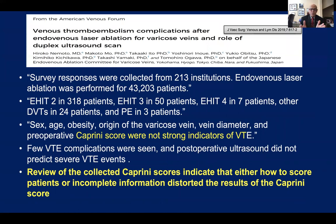A survey response from 213 institutions looked at laser ablation in 43,000 patients, finding very small incidences of EHIT classes 2, 3, and 4, DVT in 24 patients, and PE in three patients. Unusually, the authors stated that sex, age, obesity, varicose vein origin, vein diameter, and preoperative Caprini score were not strong indicators of VTE — a conclusion very different from all other work done by other investigators. There were only a few VTE complications, and postoperative ultrasound did not predict severe VTE events.